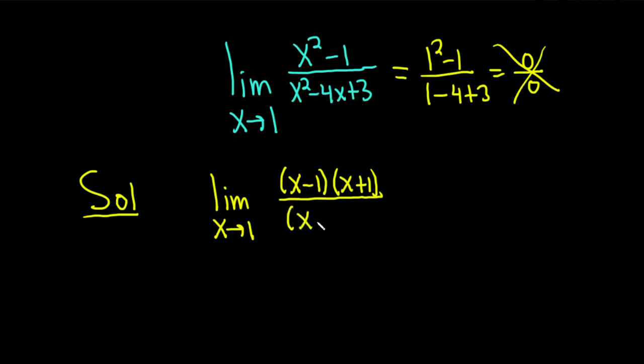We can write this as x, let's see, minus 3 and x minus 1. Let's check that. Minus 3 times minus 1 is positive 3. And if you add minus 3 and minus 1, you get minus 4. And then x times x is x squared. So all looks good.